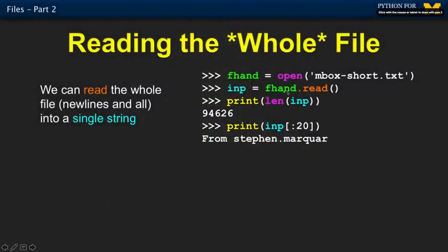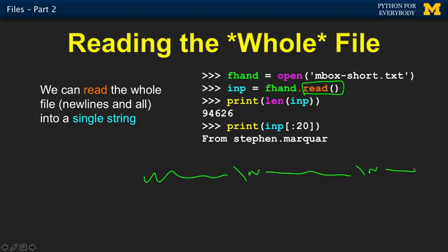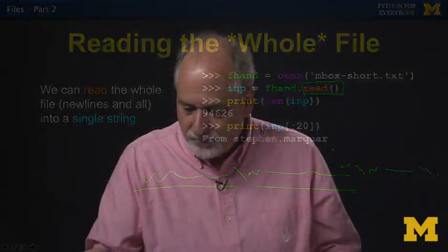Sometimes, especially when reading data from elsewhere, we want to read it all. We can read the whole thing in with dot read. The thing about this is it doesn't split it into lines — it reads all the stuff with newlines embedded, so you've got one big blob of characters punctuated by newlines. Whereas the for loop knows to go to the newline and give you each line one at a time.